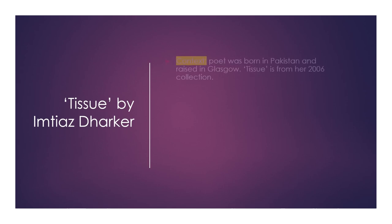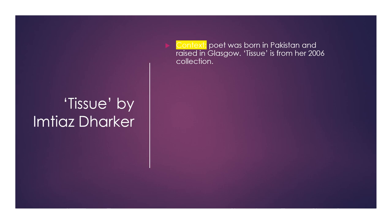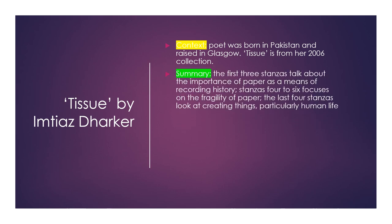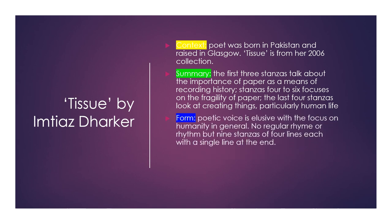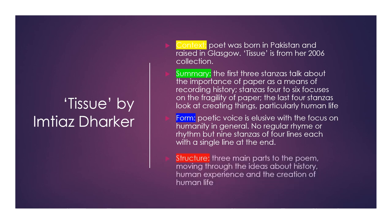Tissue by Imtiaz Dharker. The poet was born in Pakistan and raised in Glasgow, and Tissue is from her 2006 collection. The first three stanzas talk about the importance of paper as a means of recording history. Stanzas four to six focus on the fragility of paper, and the last four stanzas look at creating things, particularly human life. For the form, the poetic voice is elusive with the focus on humanity in general, with no regular rhyme or rhythm, but nine stanzas of four lines each and a single line at the end. The structure moves through three main parts: ideas about history, human experience, and the creation of human life.